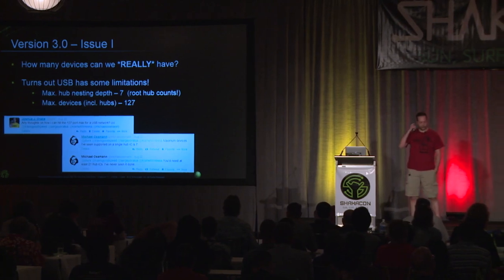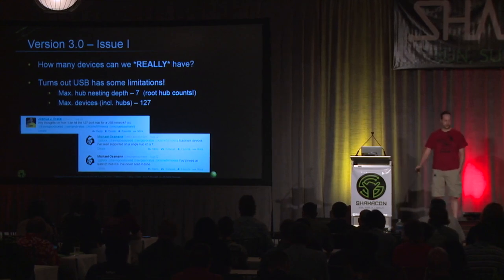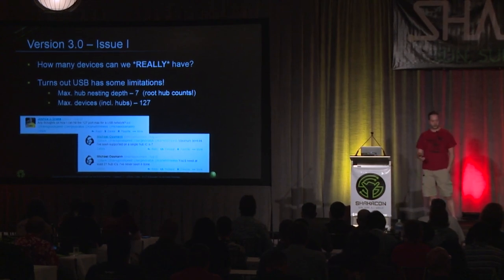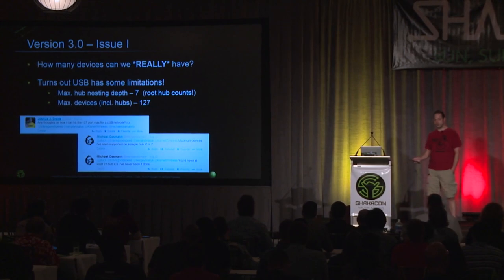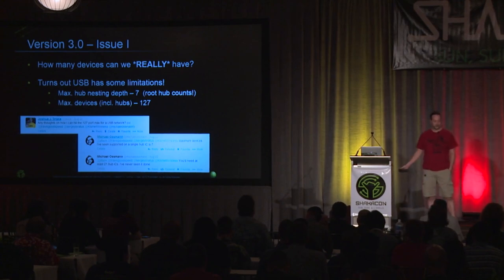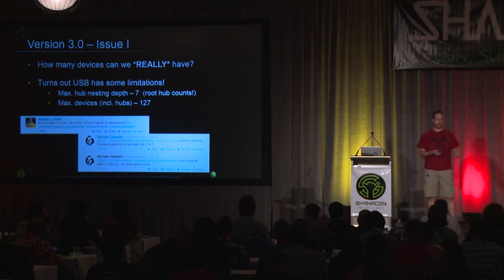I decided to rebuild it properly and started researching USB limitations to make it future-proof. I asked around on Twitter about hitting the 127-port maximum. Osman, who has done USB research, told me the most ports he's seen on an IC is seven, which makes perfect sense — that's why the Mondo Hub is a chain of hubs, it's a multiple of seven. He said I'd need at least 21 hub ICs to reach 127, and he's seen similar projects out of the Bitcoin space.